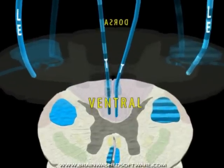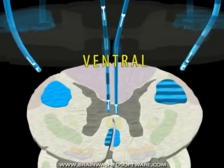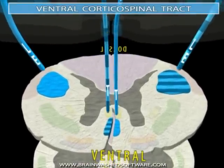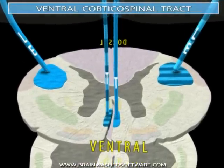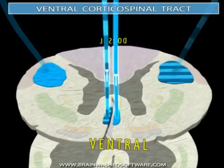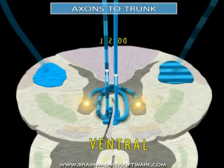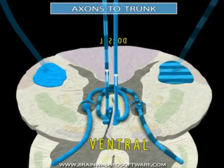Fibers that did not cross in the medulla are known as the ventral corticospinal tract. These fibers usually cross the midline as they approach their targets and influence lower motor neurons that innervate trunk musculature.